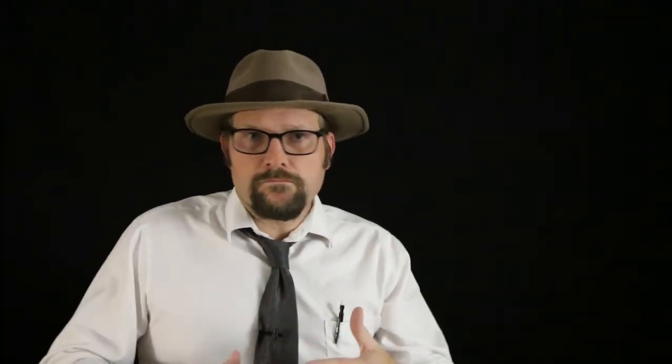This made sense with the molecular phylogeny, since turtles would be nested with other diapsid reptiles like snakes, lizards, crocodiles, and even birds. It also means that the anapsid reptiles died out at the end-Permian extinction, which is kind of sad to think about.